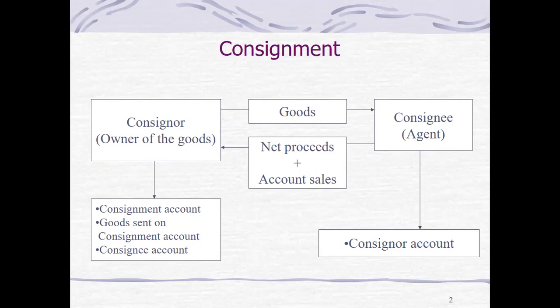The consigner wants to minimize efforts of selling and therefore assigns agents to do the sales. This applies to goods because we are talking about delivery of goods from consigner to consignee. We do not talk about services here. The net proceeds are transferred from the consignee to the consigner, while the goods are delivered from consigner to the consignee — so this is vice versa.